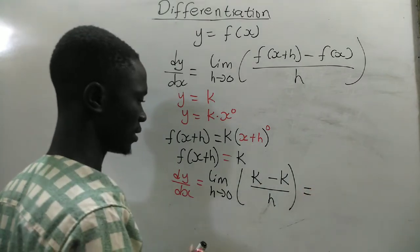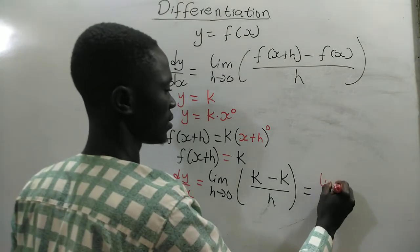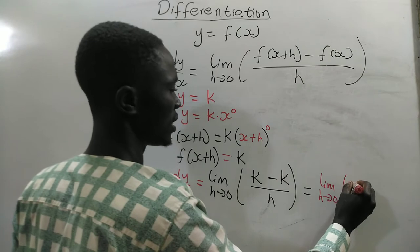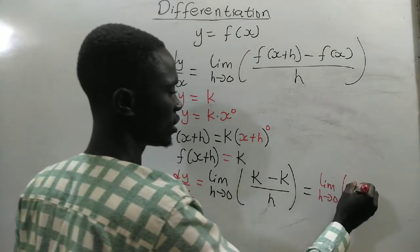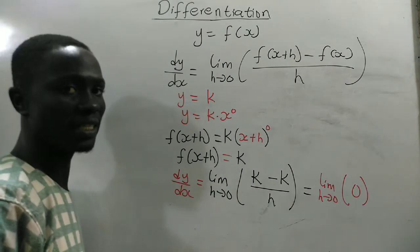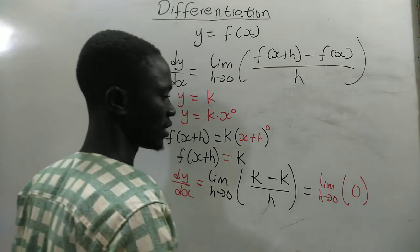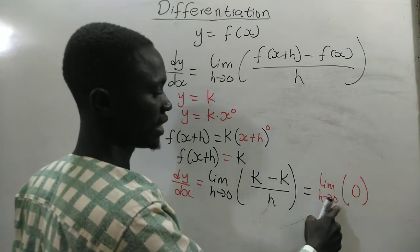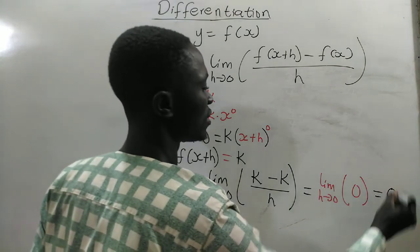Now, this is the same as the limit as h approaches 0, k minus k is 0, 0 divided by h is 0. And we know that the limit of a constant is the same as the limit, so the limit of 0 as h approaches 0 is the same as 0.